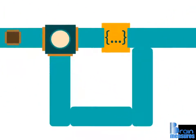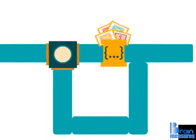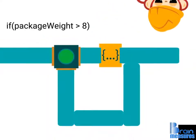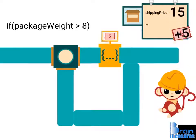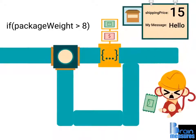When the condition in the if statement is true, we can execute as many operations as we'd like. So if the package weight is more than 8 kilograms, we can increase the value of a variable named shipping price and we can also display a message with the help of console.log.